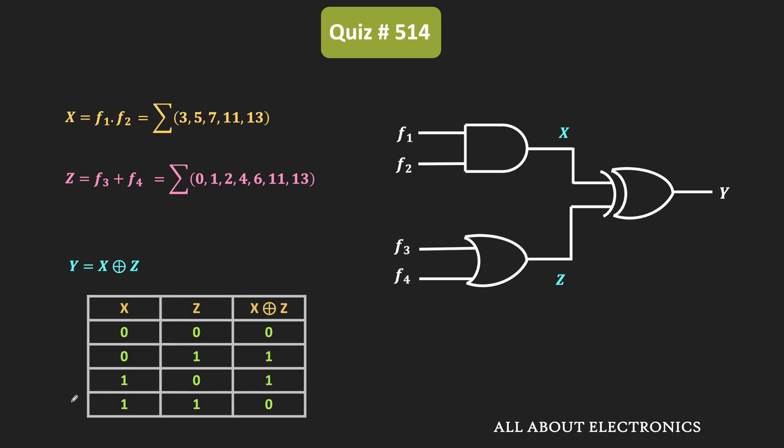So as you know, in the XOR function or in the XOR gate, the output is equal to 1 whenever both the inputs are different. And for the same input, the output is equal to 0. So similarly, when these functions x and z are applied to this XOR gate, then the output of the XOR gate will be 0 for those minterms which are common in both functions. That means here, the output y will be 0 for this minterm M11 and M13.